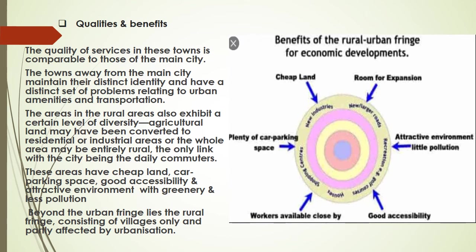In this figure, you can see that cheap land is available, room for expansion can be done, an attractive environment is there, there is little pollution, good accessibility, workers available close by, and plenty of car parking space. So all new industries, shopping centers, and new larger roads are being developed in the rural urban fringe, making it very much essential for economic development.